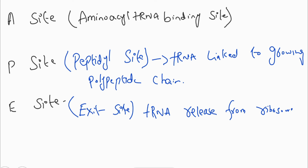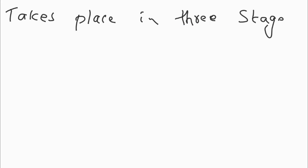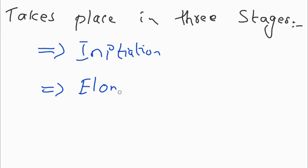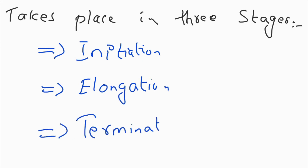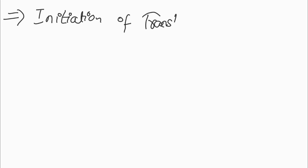Protein synthesis, or translation, takes place in three stages: initiation, elongation, and termination of translation. Now I am going to discuss the initiation of translation.